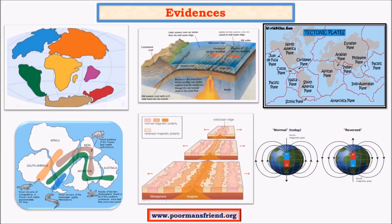The evidences supporting continental drift theory were mainly apparent — things we can see and visualize — but very general in nature, which is why the theory lacked proper scientific backing. Evidences included the apparent affinity of similar continental borders, fossils of plants and animals, and the Gondwana glacial lands shared across India, Africa, Antarctica, Australia, and South America.